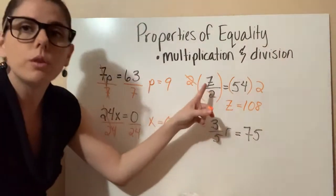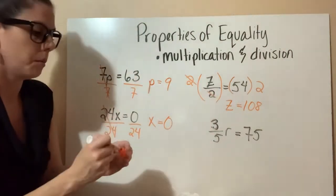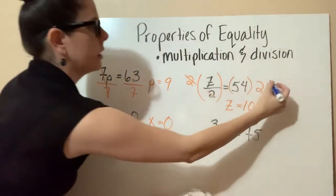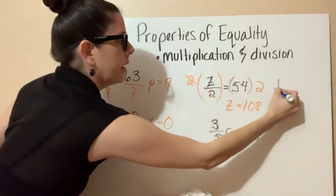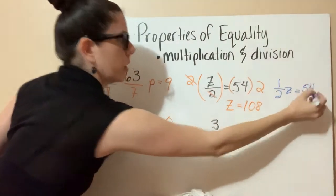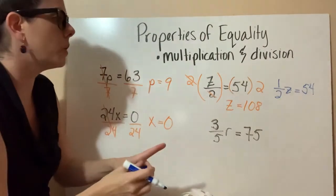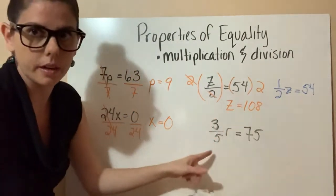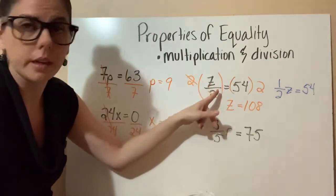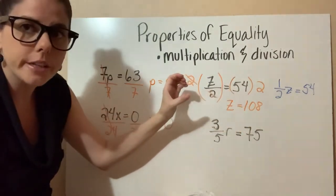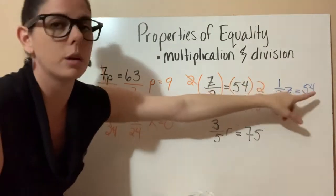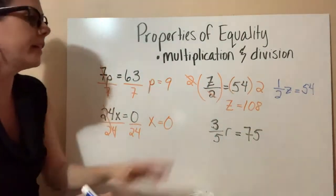Another way you can write this — I'll use a different color — is to have one-half z equals 54. If you wanted to write it like that, you could, because there's essentially a 1 times z here. If you pull that fraction out front, you get one-half z equals 54, and that's the same thing.